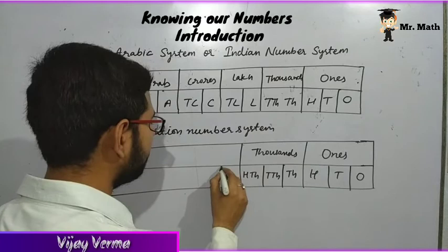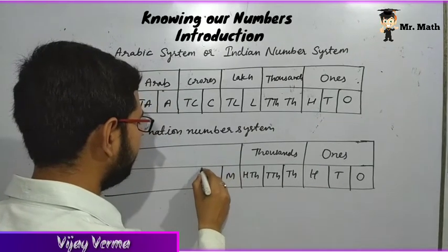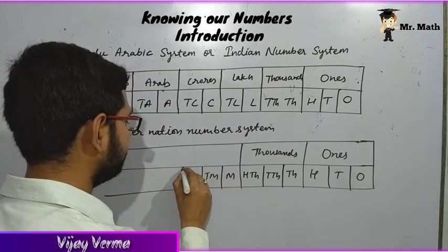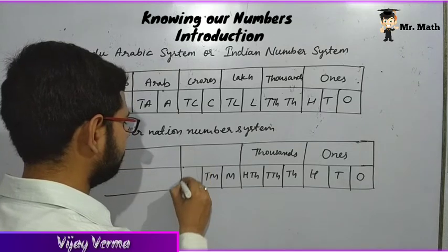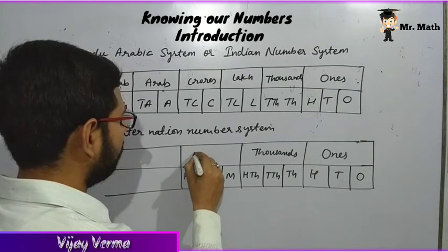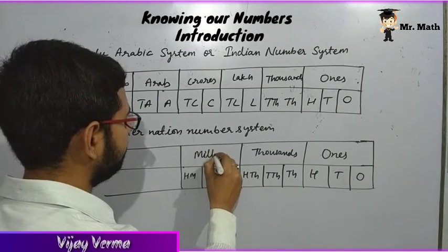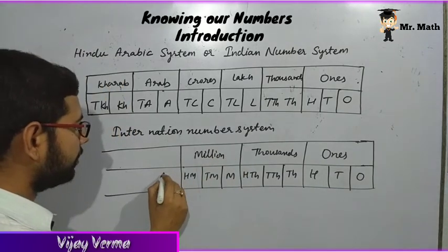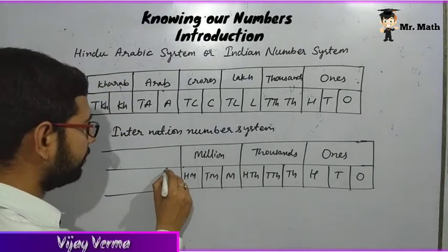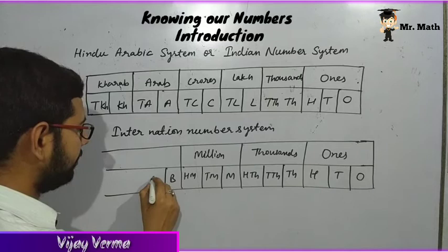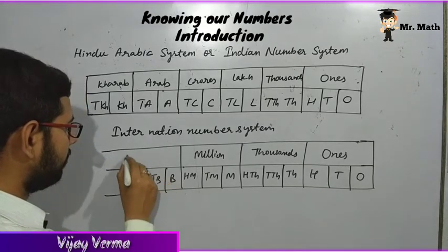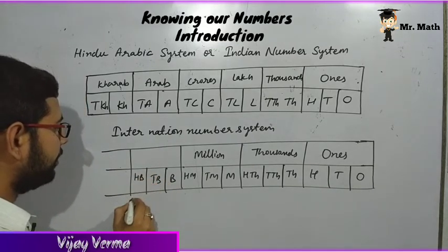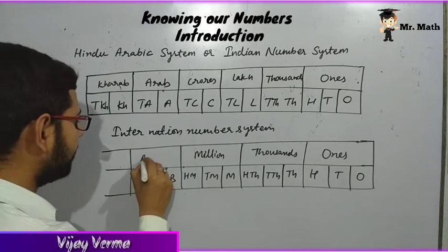After the thousands period comes the million period: million, 10 million, and 100 million. After million comes the billion period: billion, 10 billion, and 100 billion.